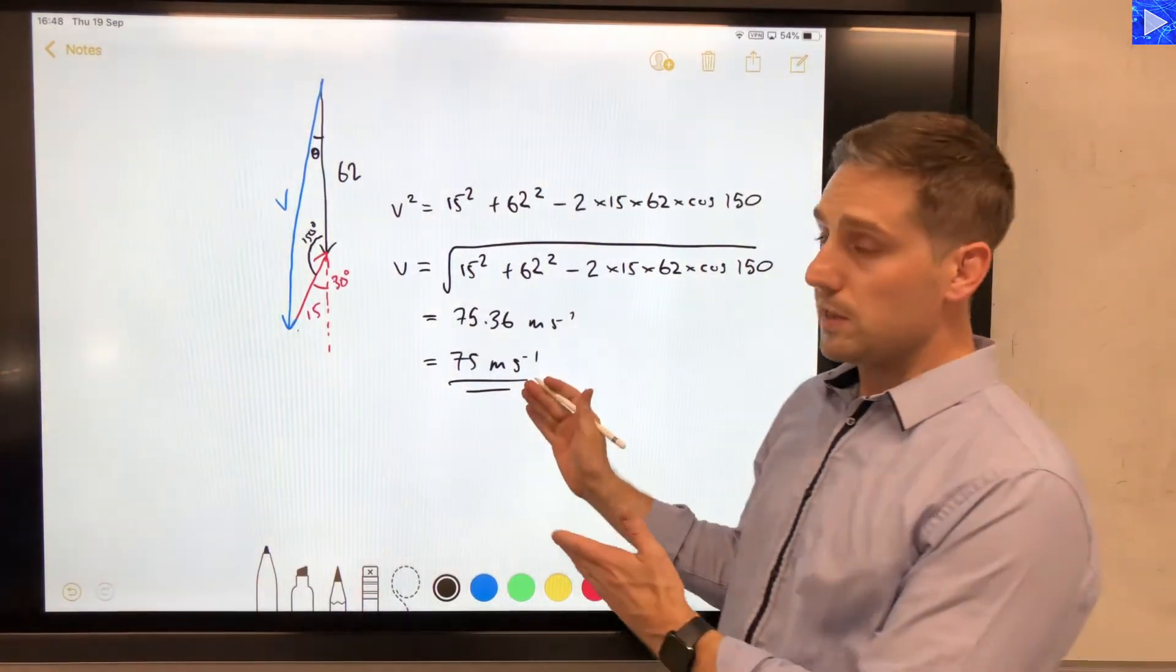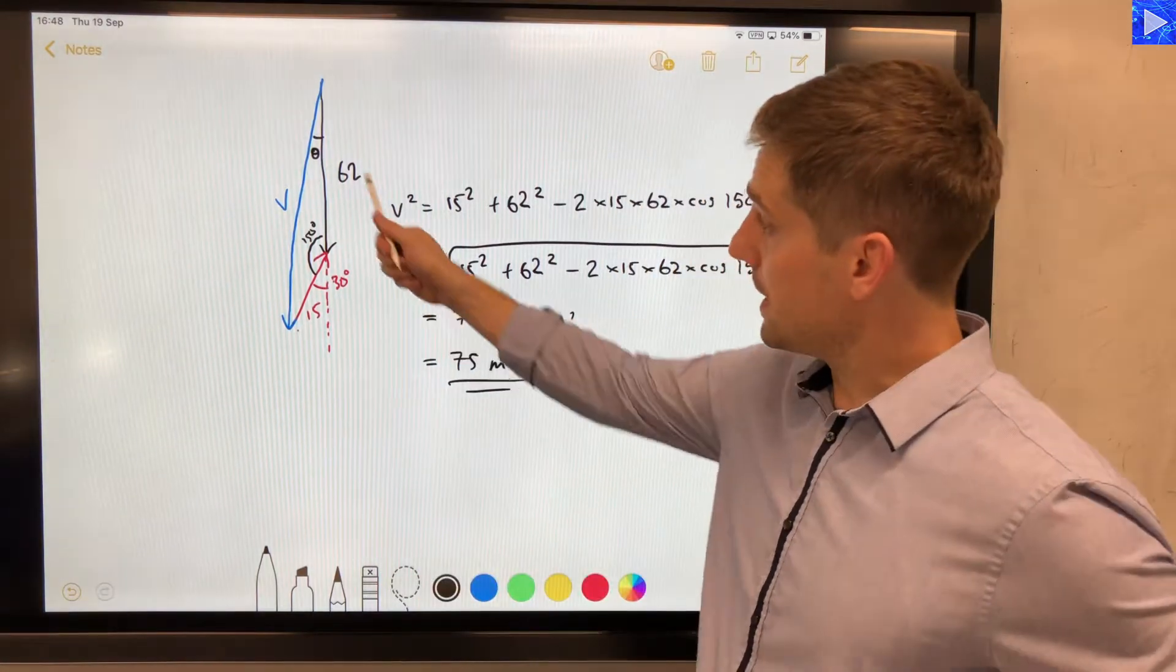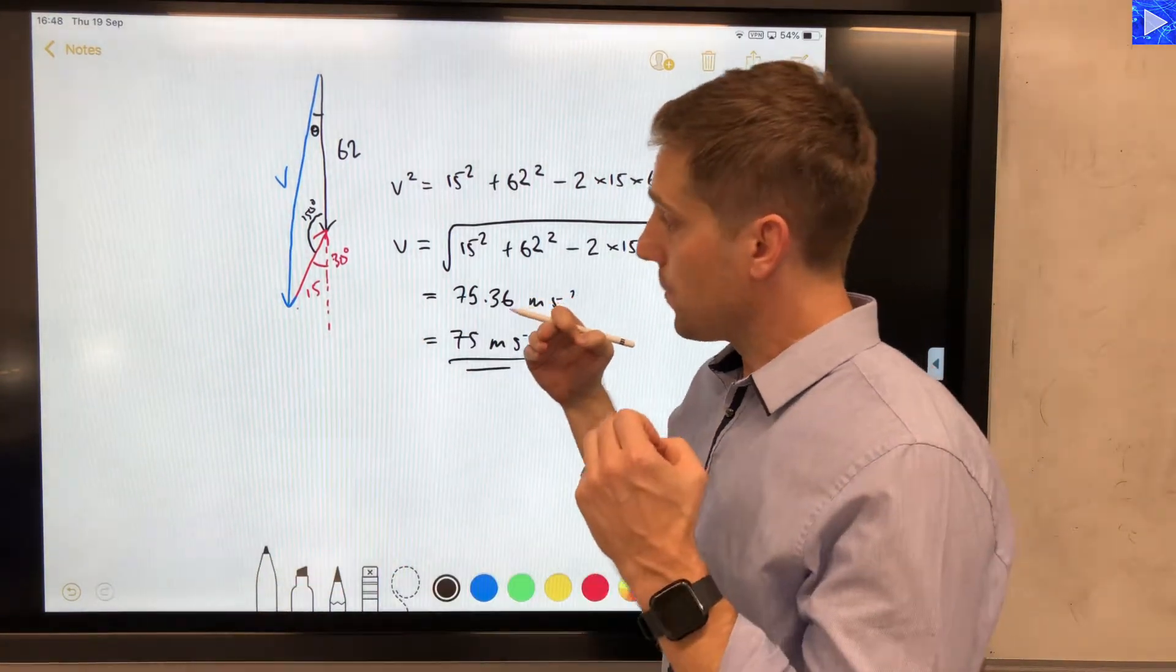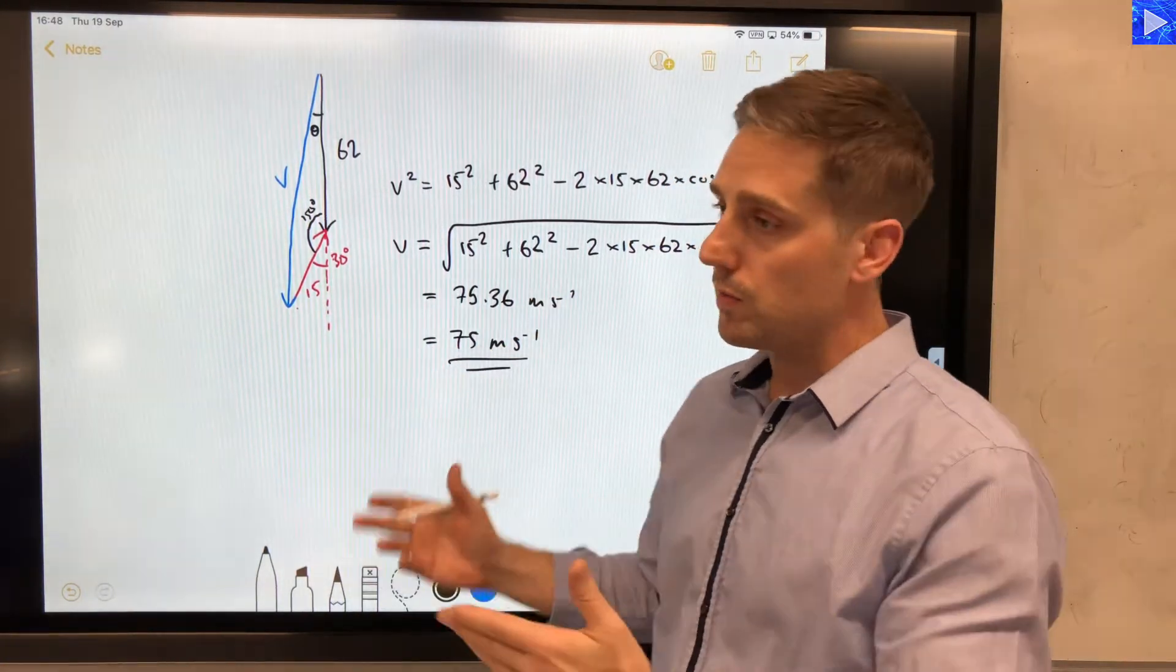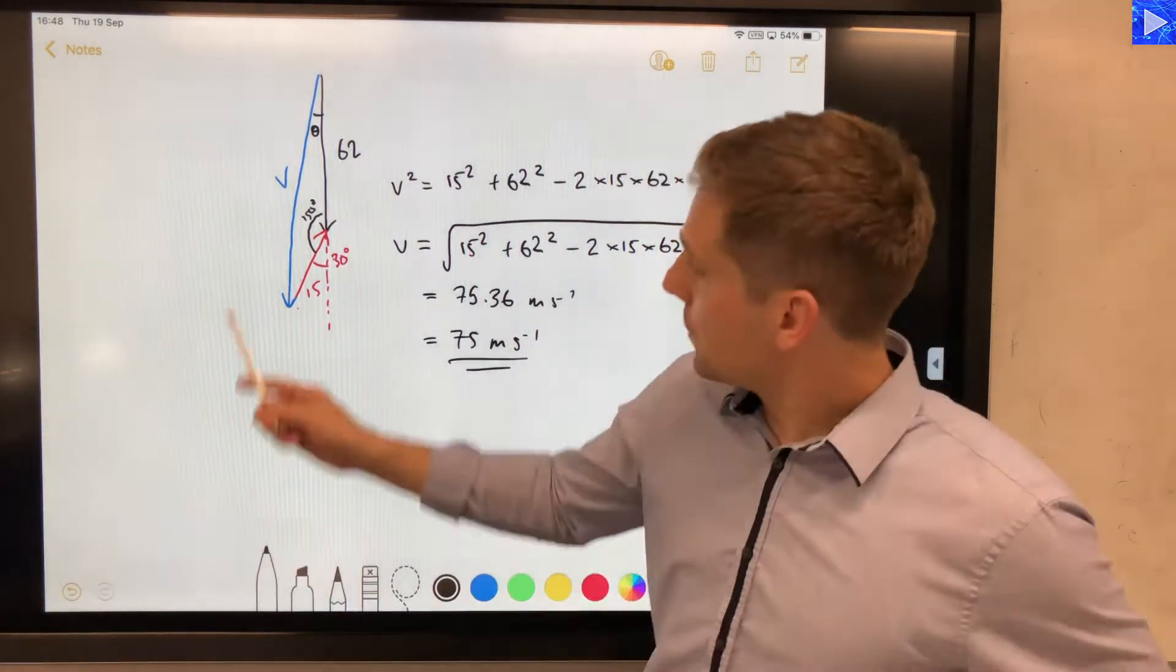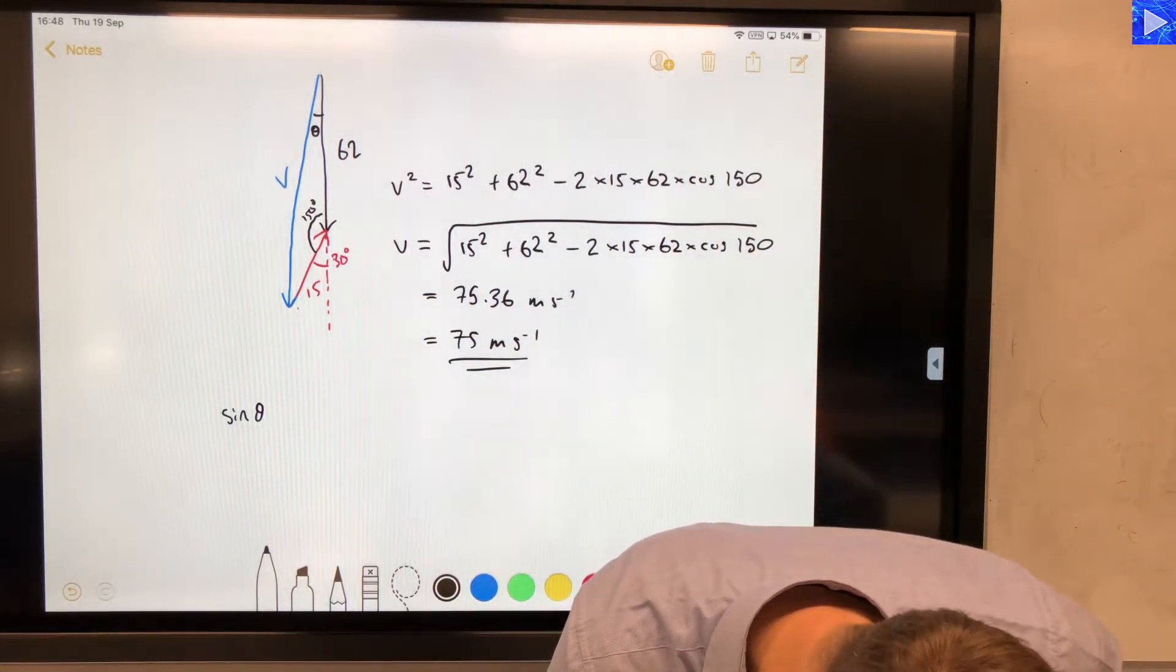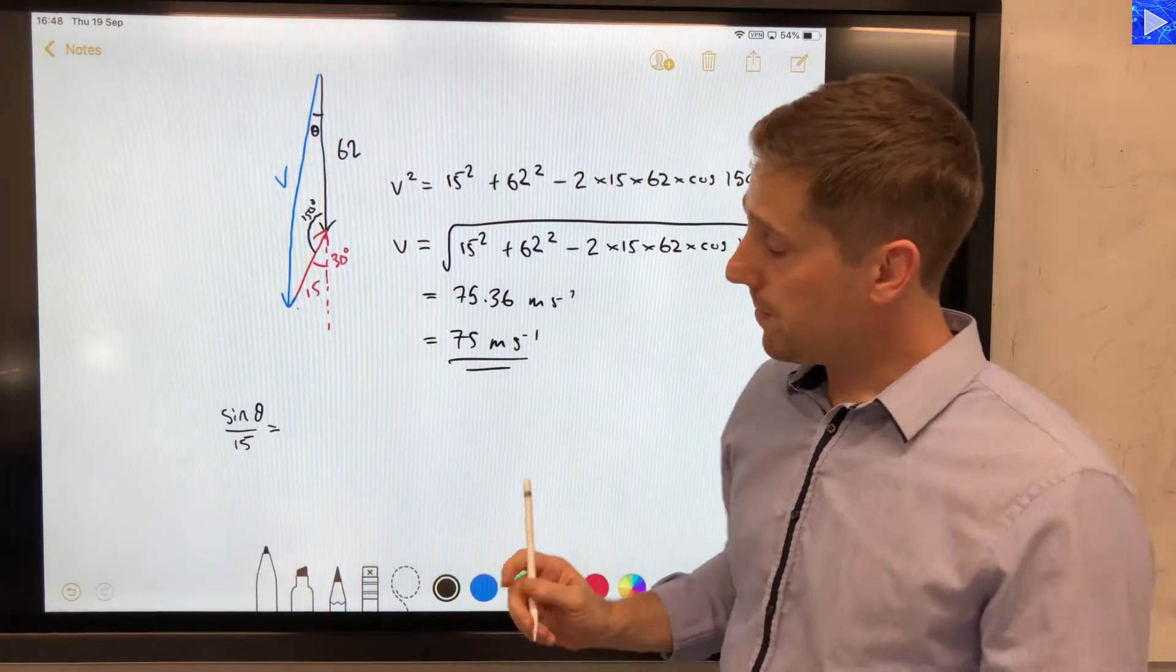Okay, that's our velocity solved using the cosine rule. Now I'm going to show you how to use the sine rule to determine the unknown angle. So sine rule is a ratio of sine of an angle to its opposite side is equal to the sine of another angle over its opposite side. Okay, so we want to know theta, so sine theta divided by 15, over 15, is going to be equal to the sine of an angle divided by its side.